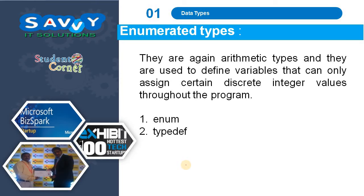Enumerated datatypes are also arithmetic types and are used to define variables that can only assign certain discrete integer values throughout the program. The types include enum and typedef.